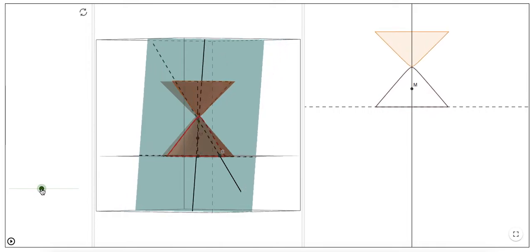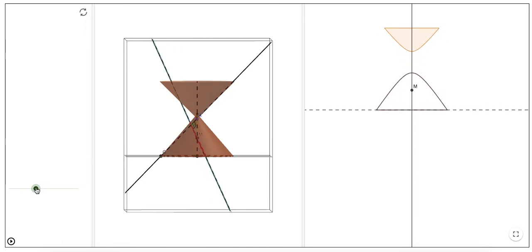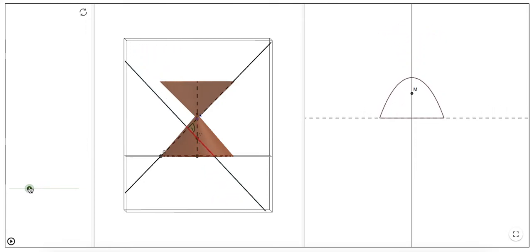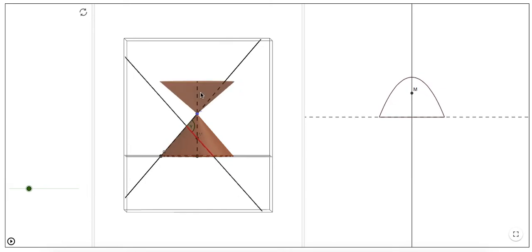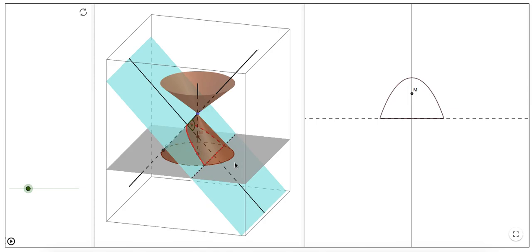Again, if I make my cut parallel to the generator—see how this line is parallel to this line—the shape that's generated is a parabola. You can see that parabolic shape as I rotate it around.